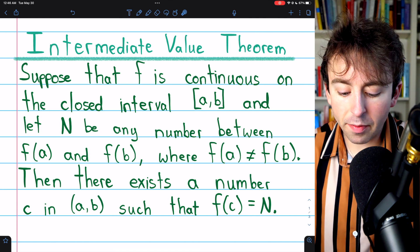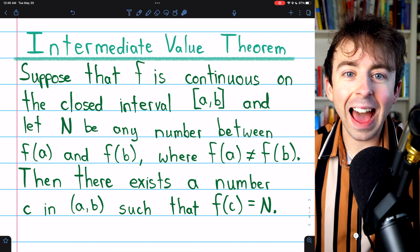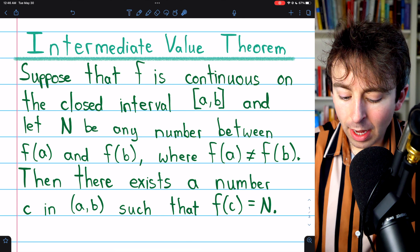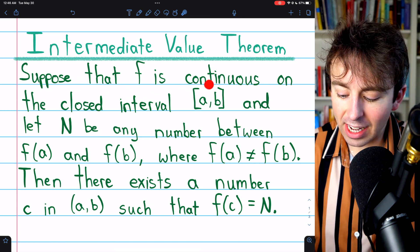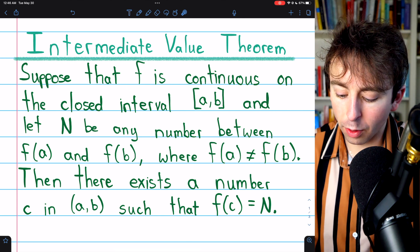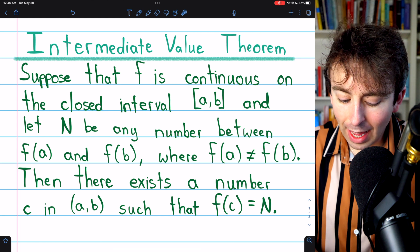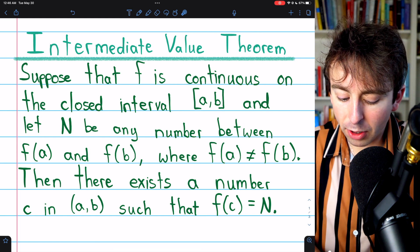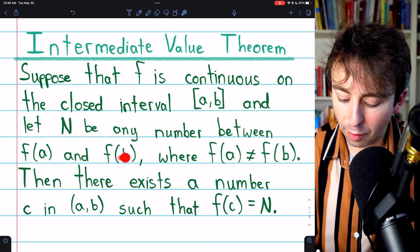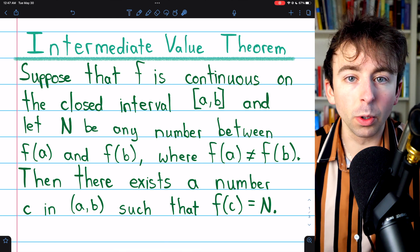So here's the theorem, the Intermediate Value Theorem, also often called the IVT for short. Suppose that f is continuous on the closed interval [a,b], and let N just be any number between f(a) and f(b), where f(a) ≠ f(b).